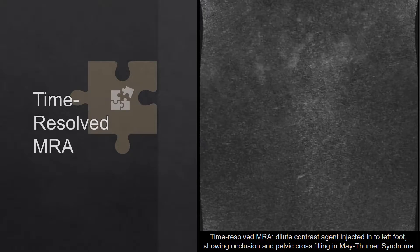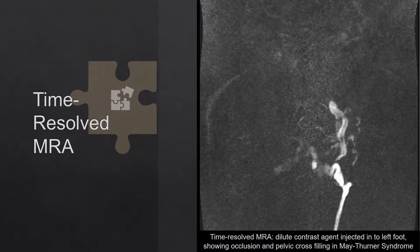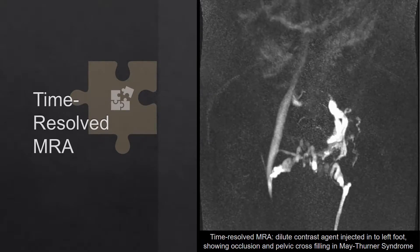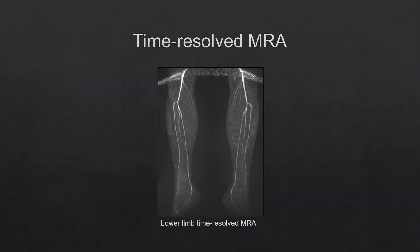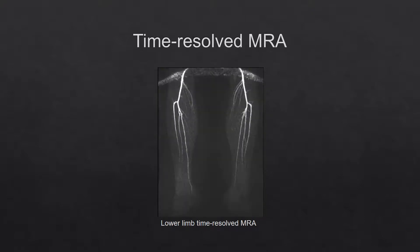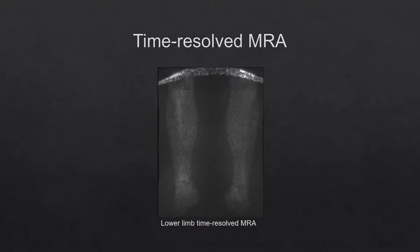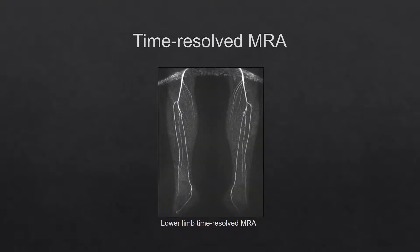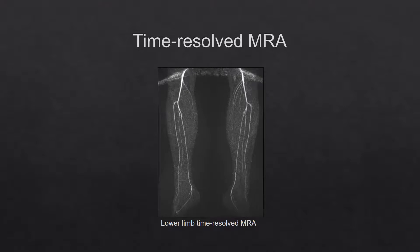Now we'll see how this applies to time-resolved MRA. Contrast-enhanced MRA is viewed as slow because the examination takes longer than a CT angiogram, but the lack of ionizing radiation means that the sequence can be run again and again, giving us dynamic imaging — one of the main strengths of contrast-enhanced MRA. In the lower limb, it allows pure arterial imaging without the distraction of venous overlay, even if contrast arrives at the legs at different times.